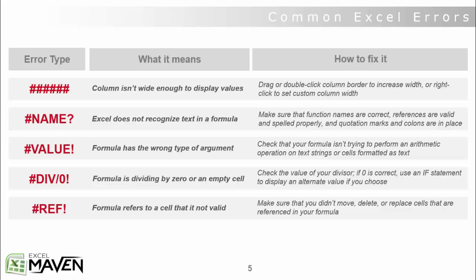Last but not least, we've got the REF error, which means the formula is referring to a cell that's not valid. To fix this, just make sure that you didn't move, delete, or replace cells that are referenced in your formula. For instance, if you have a lookup or reference function reading from a specific column of cells, and then you accidentally delete that column, all of your functions that were referencing that column are now going to give you a REF error because they don't know what values or cells to read from.